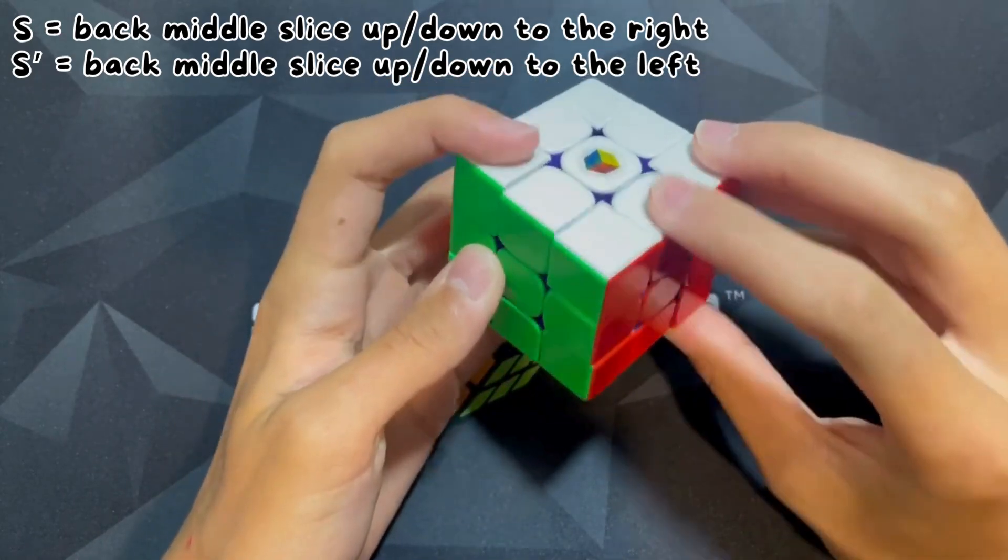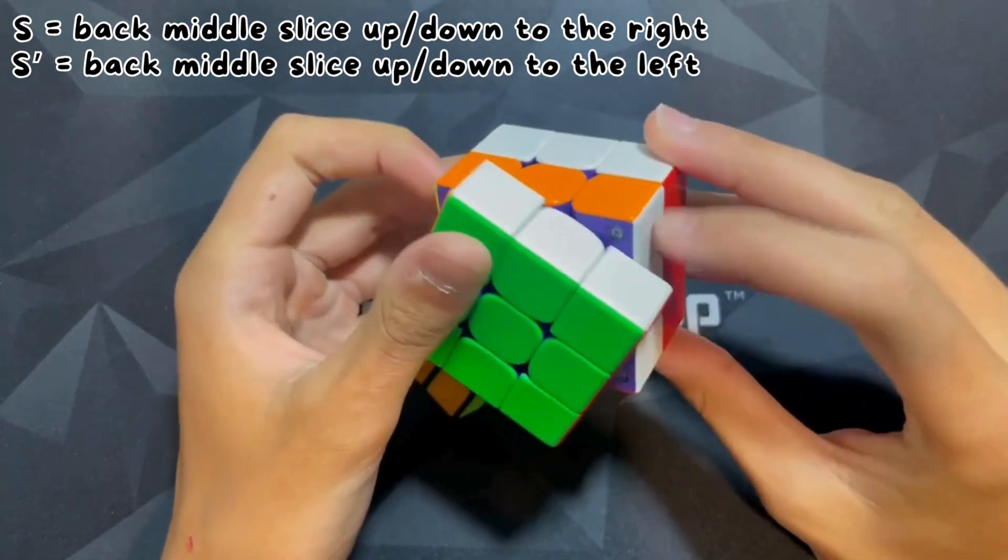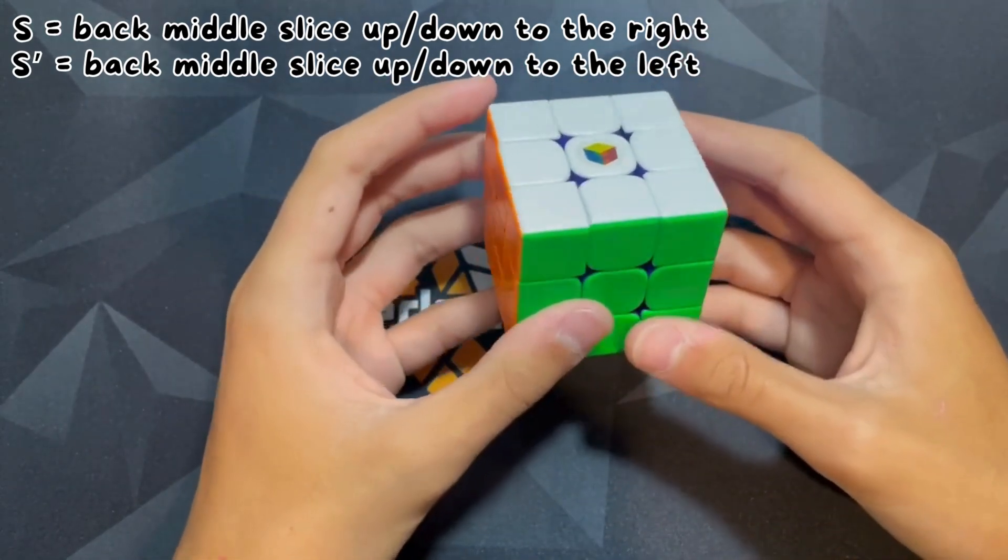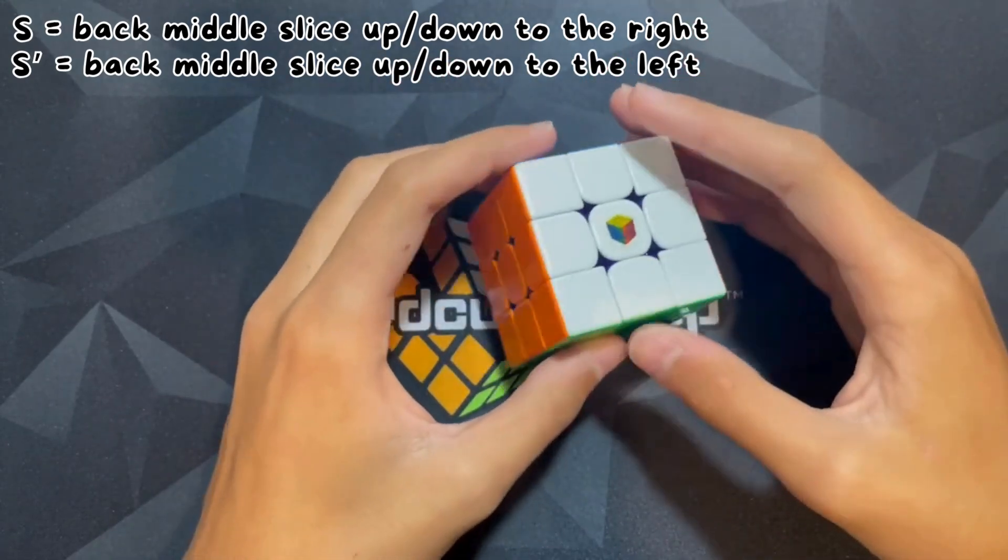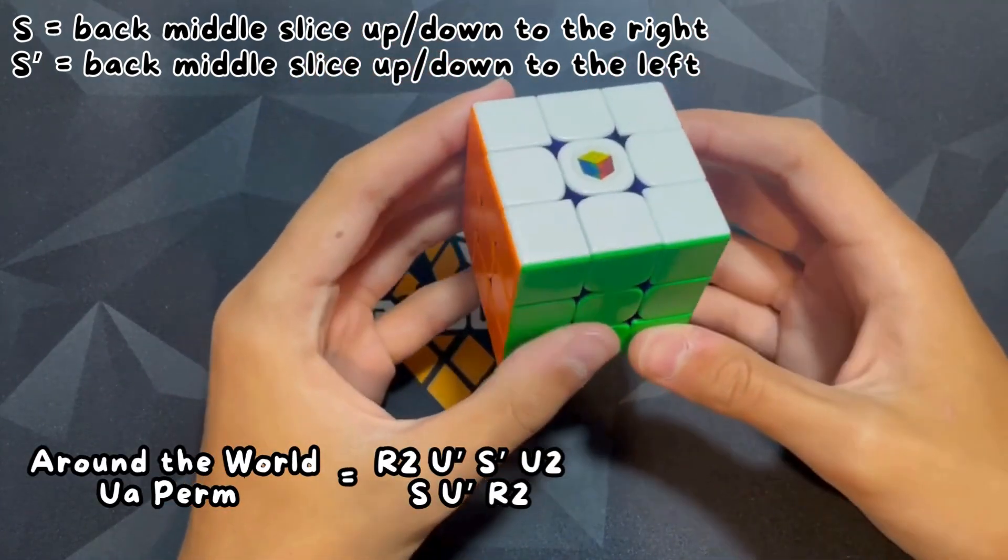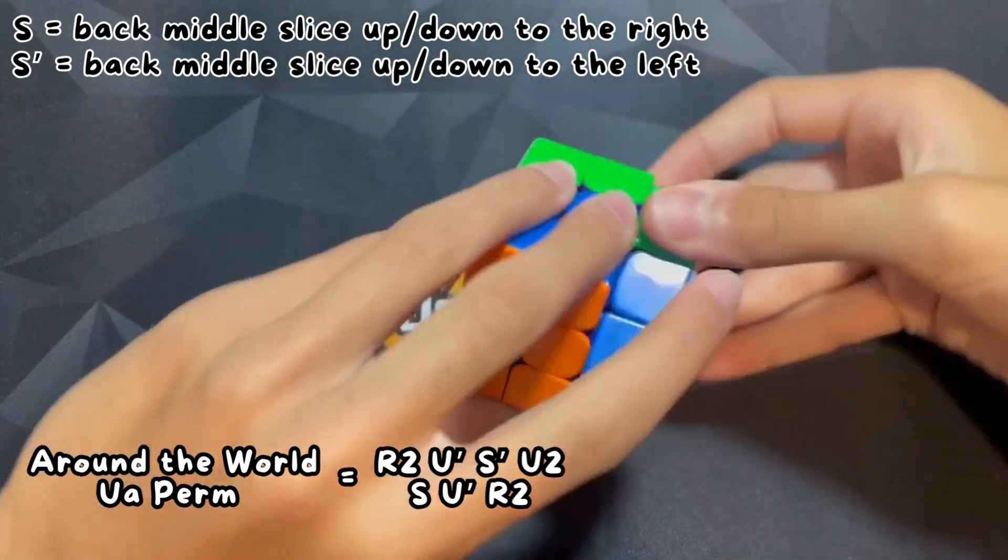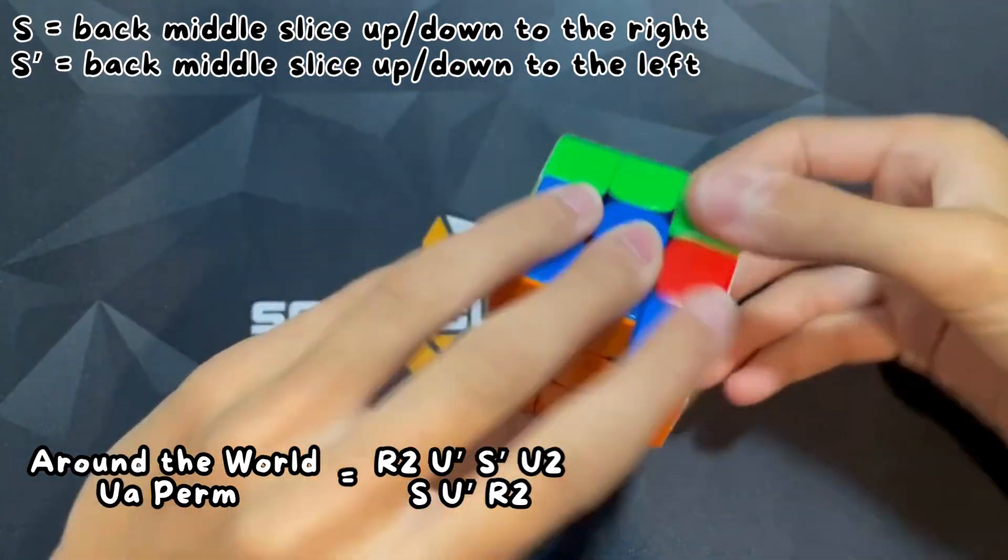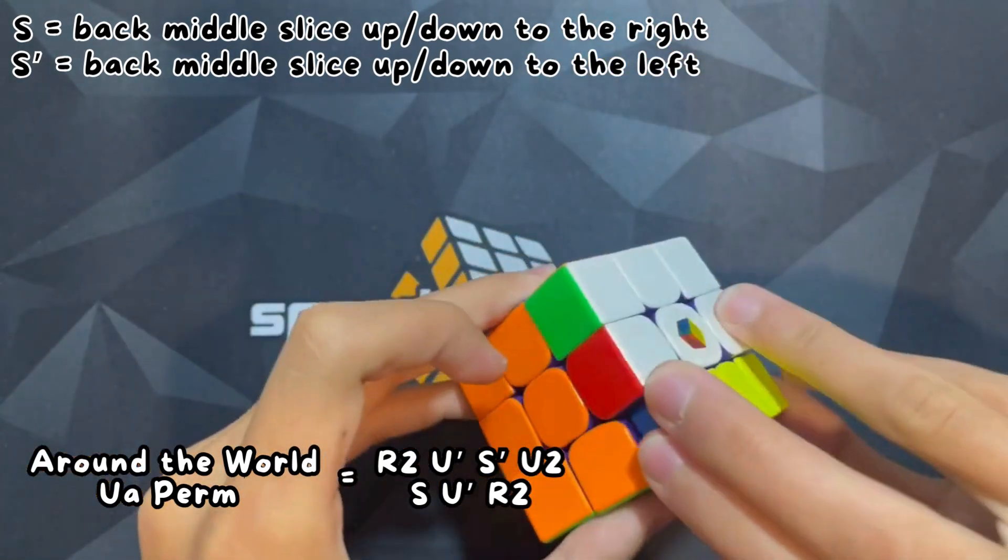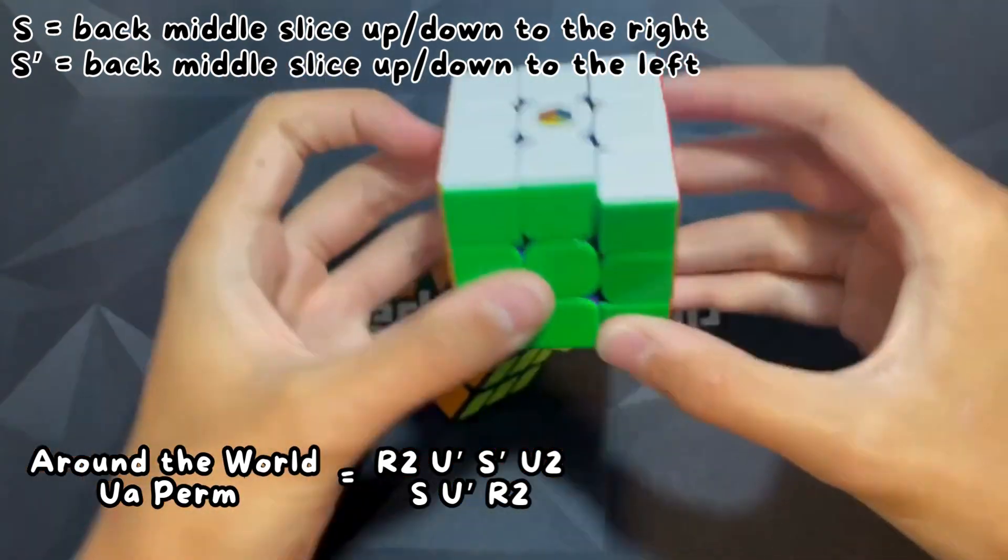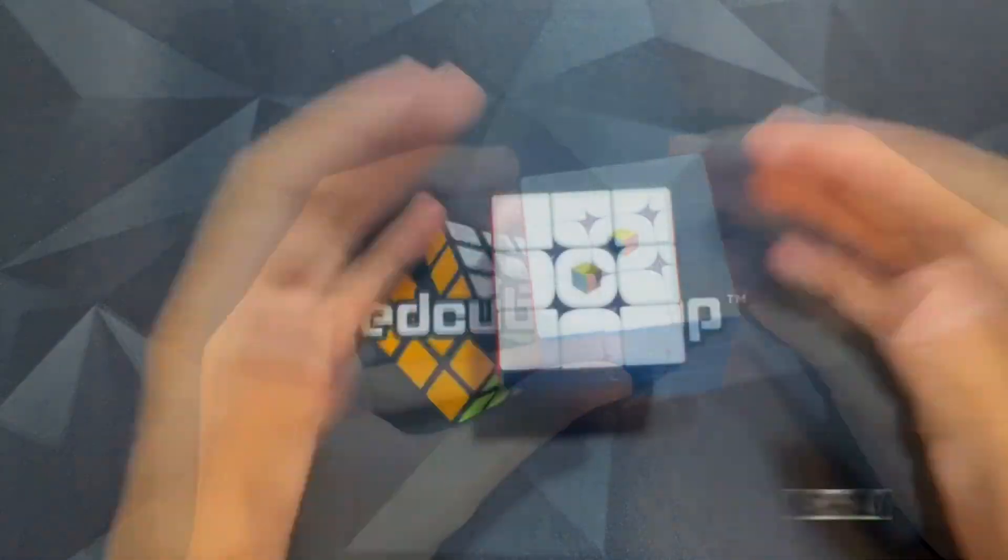An example for S is the around-the-world U perms. Good example. You can also find the video link in the description. Do an S prime move in there and an S move. Actually S prime move and an S move.